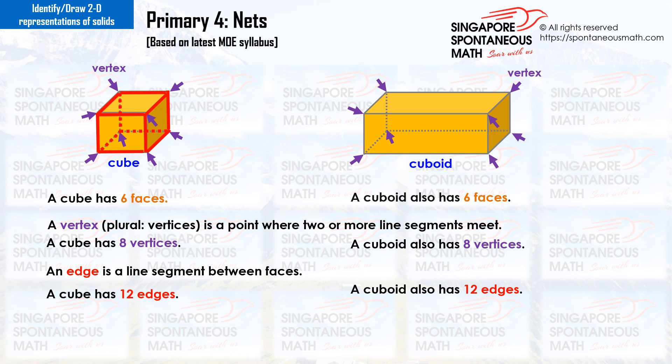A cuboid also has 6 faces. A cuboid also has 8 vertices. A cuboid also has 12 edges.